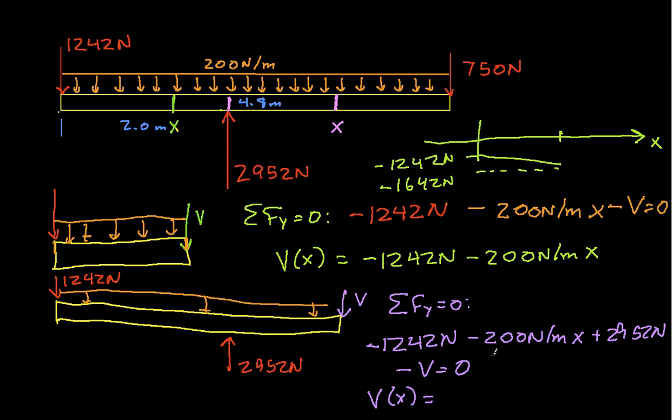we get 1310 newtons minus 200 newtons per meter times x. And so, when we graph this, it looks like this. So, it goes up, it starts up here at 1310 newtons, and it drops down over here to a value, at 4.8 meters, it drops to a value of 750 newtons.